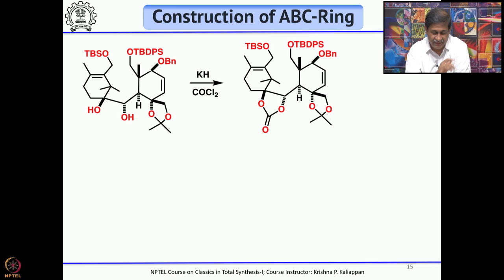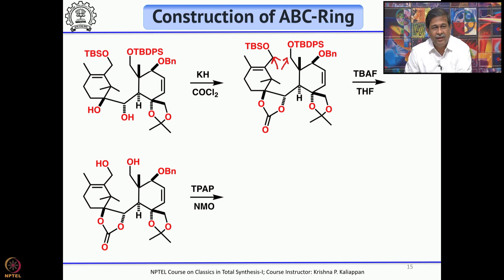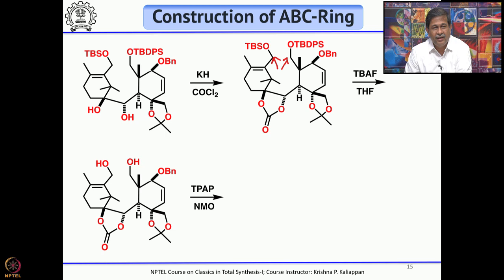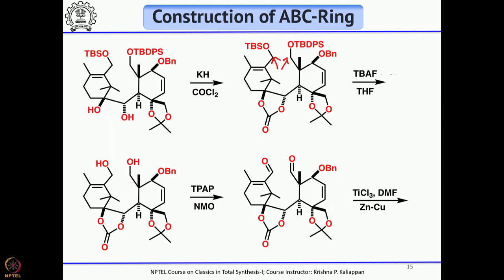For carrying out McMurry coupling, you need an aldehyde on both sides. Treatment with TBAF removes both TBS and TBDPS groups. Oxidation with tetrapropylammonium perruthenate (TPAP) gives the dialdehyde. Under McMurry coupling conditions — titanium(0) — the dialdehyde gives the corresponding diol. You now have the diol, and A ring, B ring, and C ring are all constructed.